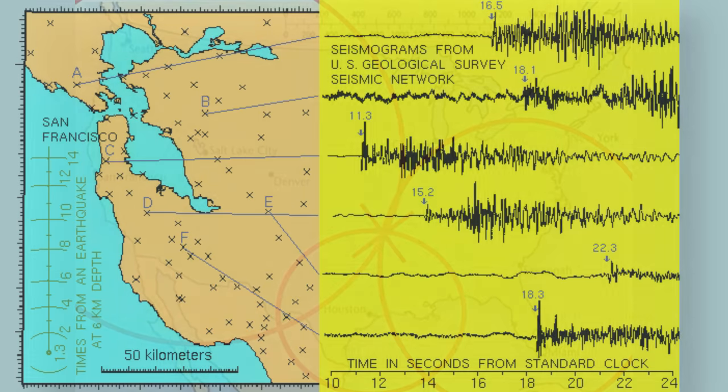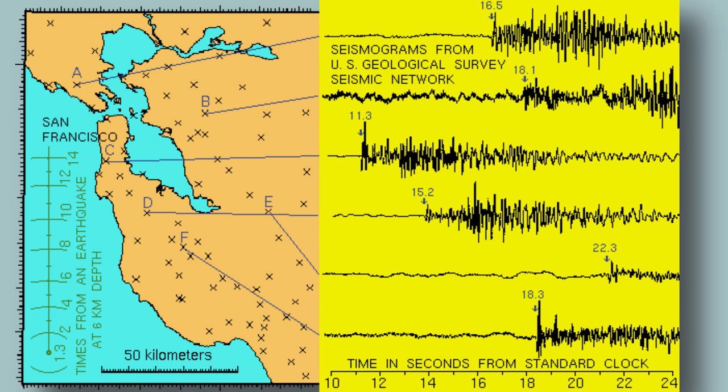But in real life, when scientists want a location, they aren't going to settle for the intersection of just three circles. The more data, the better.